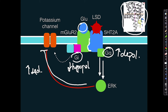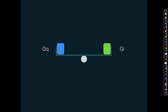However, when LSD in particular, because of this conformational change — because it causes the glutamate and the 5-HT2A receptor to kind of stick together — the 5-HT2A receptor actually inhibits or weakens this GI pathway, weakens the ability of the mGluR2 receptor to activate the GI pathway. So let's see if we can use this to explain why LSD in particular is psychedelic, but Lyseride isn't.